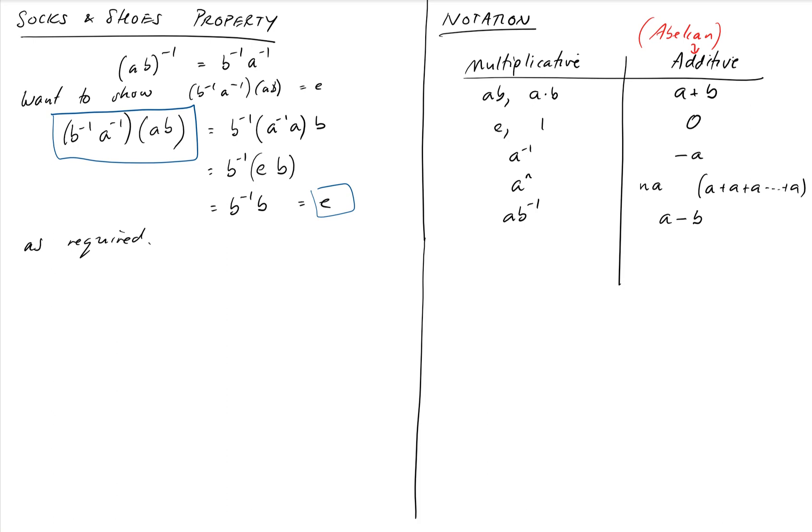One other little note, a to the minus n, is a notation we often use. I should say, for n greater than zero here, negative powers, think of this as, a inverse, times a inverse, times a inverse, n times. Which you can also write as, a inverse to the power of n, which also is, a to the power of n, inverse. They all mean the same thing, so negative powers, negative integer powers, can be made sense of, in this way.